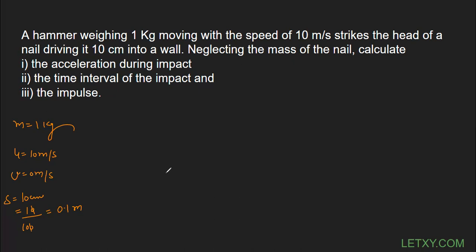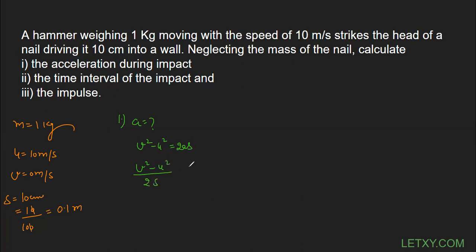Now what we need to calculate — first of all — is the acceleration. In the first part, initial velocity, final velocity, and displacement are all given. You can identify this calls for the third equation of motion: v² − u² = 2as. We put in the values and rearrange to get a = (v² − u²) / 2s.